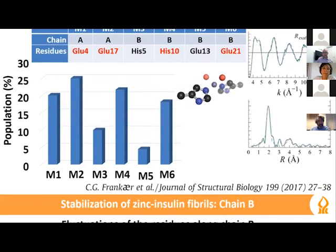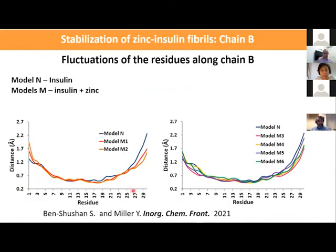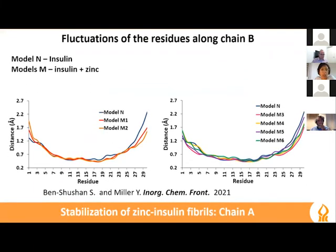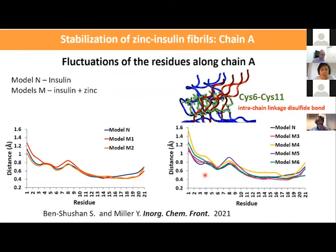We also looked at fluctuations of residues along chain B to examine stabilization by zinc ions in insulin fibrils. We found that zinc does not significantly affect chain B and actually stabilizes it across all models. Looking at fluctuations along chain A, we again see little difference compared to insulin in the absence of zinc ions. However, we found some elevated fluctuation in residues 6 to 11, which corresponds to the intra-chain disulfide bond linkage in chain A.